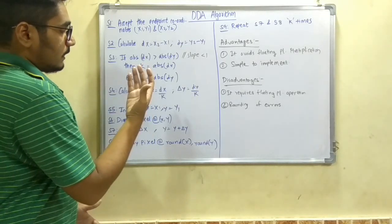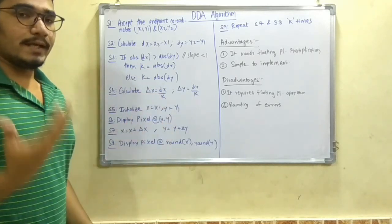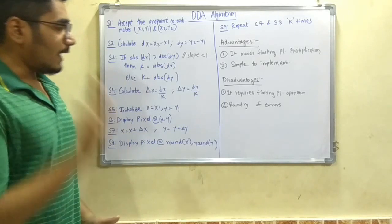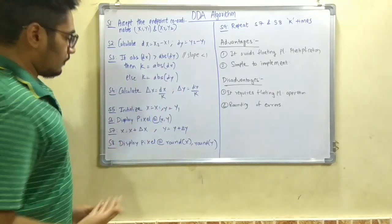So that is calculated by delta x equals DX upon K. K is from the previous step that we get from step 3, and delta y is DY upon K.